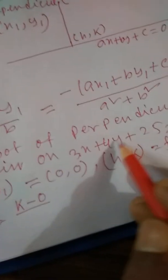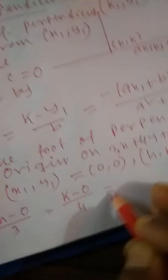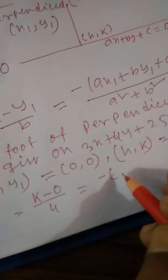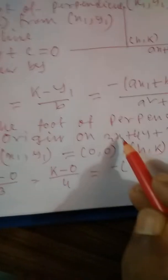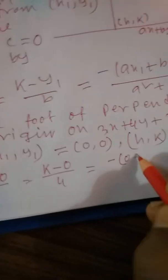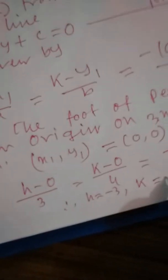A = 3, B = 4, so A² + B² = 9 + 16 = 25. The right-hand side becomes −25/25 = −1. So H/3 = −1 giving H = −3, and K/4 = −1 giving K = −4.